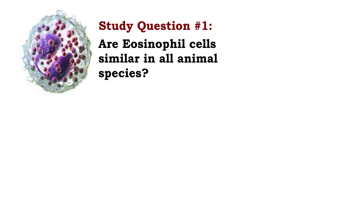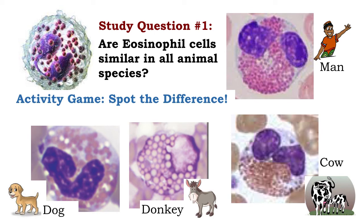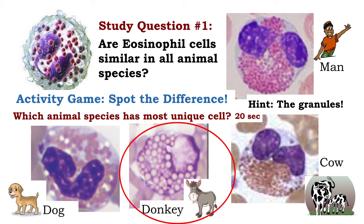Now that we know the structure and function of the eosinophil, I want to ask you a question related to the third objective: are eosinophil cells similar in all animal species? I've given you four animal species — moving clockwise: man, cow, donkey, and dog. Can you spot the difference? Which animal species has the most unique cell? Look at the granules — are they large, are they orange? The donkey comes out as the most unique. The eosinophilic granules are not large, pink, or orange; instead, they are pale pink, as compared to the darker orange and reddish granules of other species.